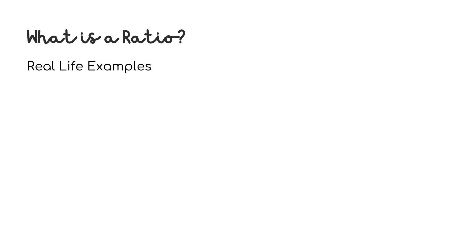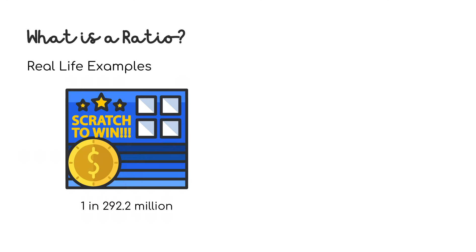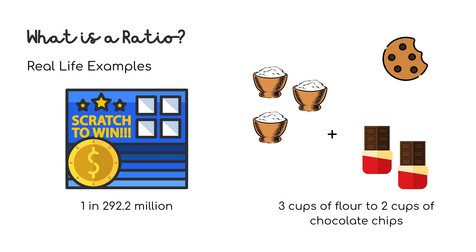This all sounds super abstract and useless, but in real life you'll hear ratios used in statistics — like you have a 1 in 292 million chance of winning the Powerball lottery. Or just in everyday life, for a chocolate chip cookie recipe, your ratio of flour to chocolate chips is 3 to 2, which means for every 3 cups of flour, you use 2 cups of chocolate chips.